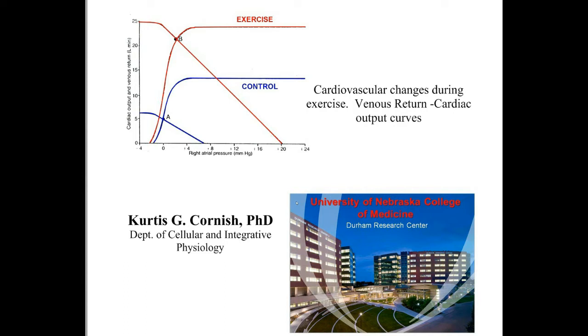In preparation for and during exercise, the cardiovascular system undergoes some important adjustments. They allow the average individual to go from a resting cardiac output of about 5 liters a minute to a cardiac output of about 25 liters a minute. This is due to changes in cardiac function and venous return.